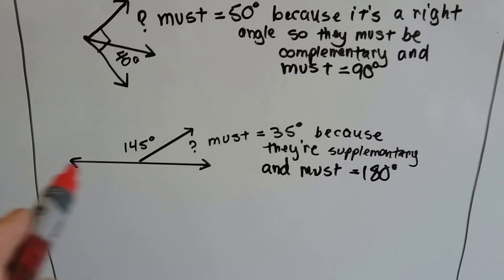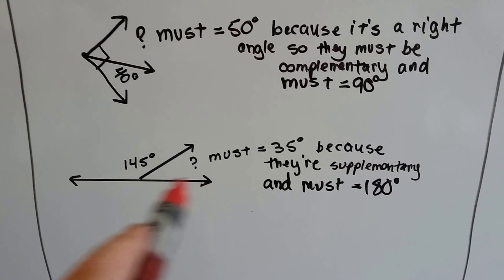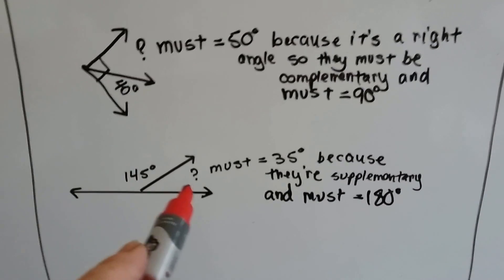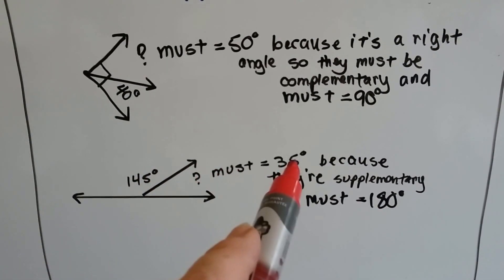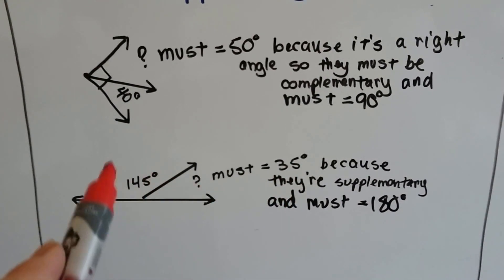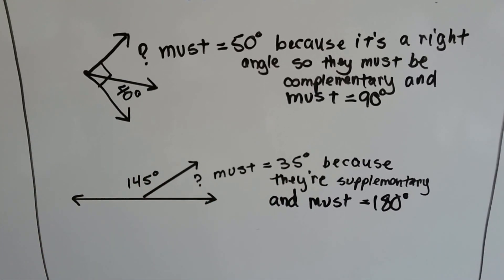Here's one. We know this is a straight angle right here. And this is 145. So what could this one be? You do 180 minus 145 and you get 35. It must be 35 because they're supplementary. They must equal 180.